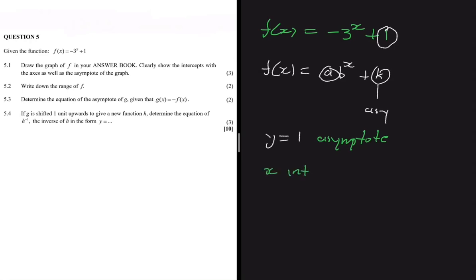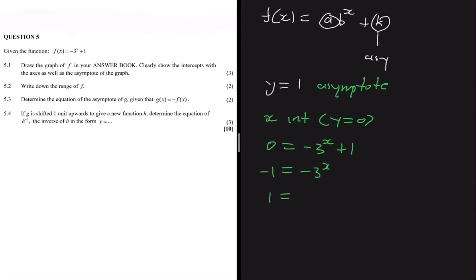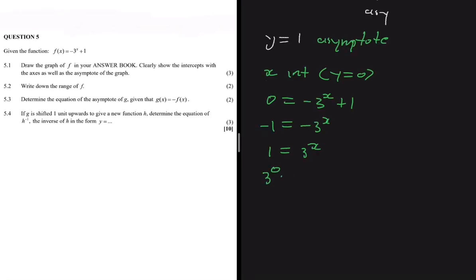For the x-intercept, we let y = 0. So we get 0 = -3^x + 1. Taking 1 to the left-hand side gives -1 = -3^x, so 1 = 3^x. We can write 1 as 3^0, so equating the exponents gives x = 0. We have an intercept at x = 0, y = 0.